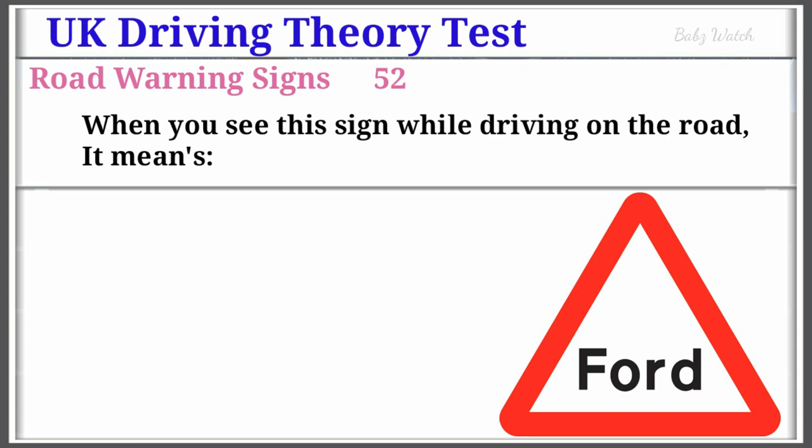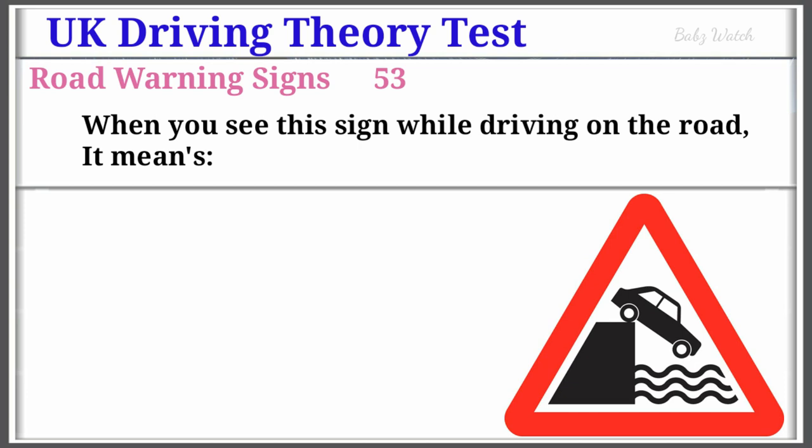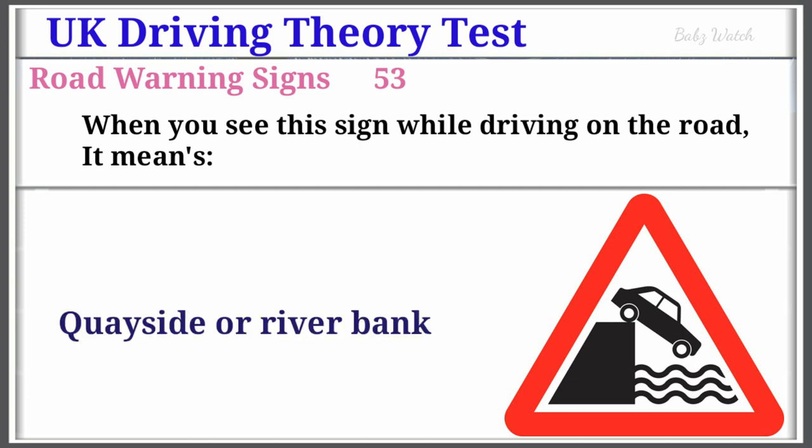UK Driving Theory Test Road Warning Sign Number 52: When you see this sign while driving on the road, it means Worded Warning Sign. Warning Sign Number 53: When you see this sign while driving on the road, it means Quayside or River Bank.